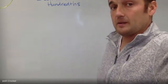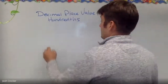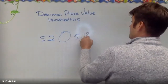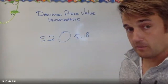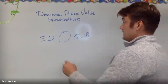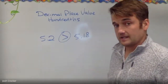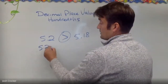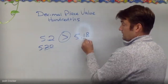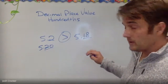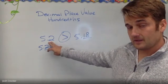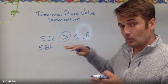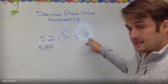Last thing with hundredths: we need to talk about comparing them. Let's say that I have 5 and 2 tenths, and I'm comparing that to 5 and 18 hundredths. The point we need to understand is that 2 tenths is greater than 18 hundredths — because, remember, two tenths is just like 20 hundredths. And 20 out of a hundred is more than 18 out of a hundred.